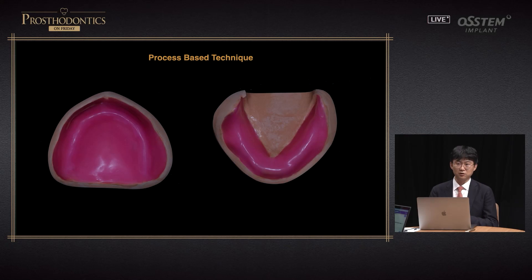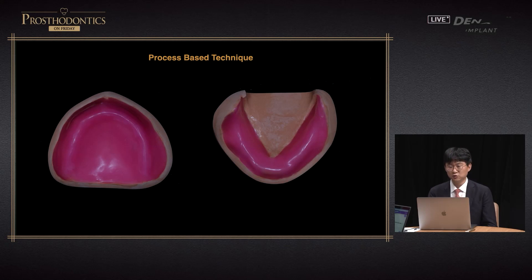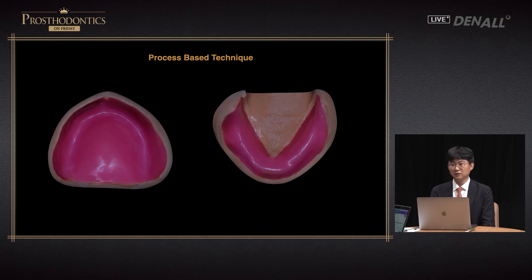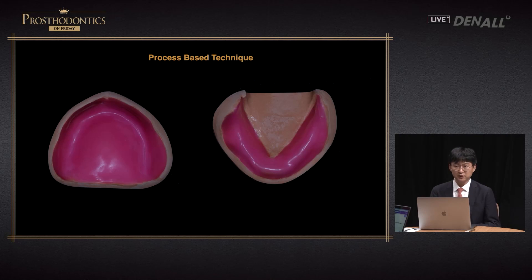The base is made with wax and cured first, then the wax rim is mounted over it — a technique I saw many dentists using when I visited the United States. It has a problem of double curing, so I don't use it often. But when the base is stable with this technique, the adjustment you have to make in the final position is considerably reduced, which is an advantage.